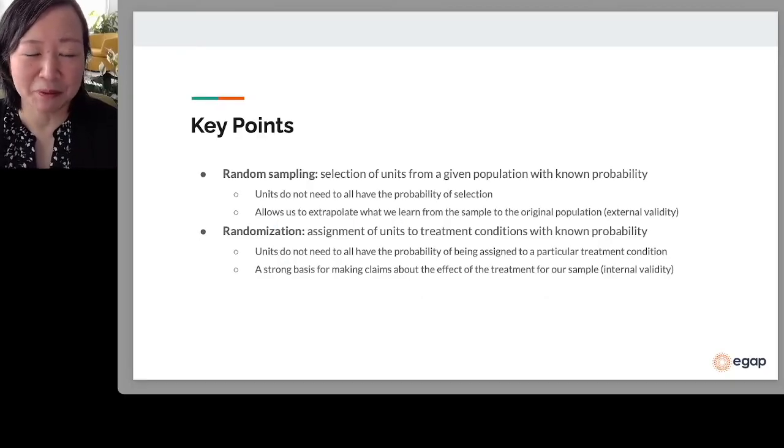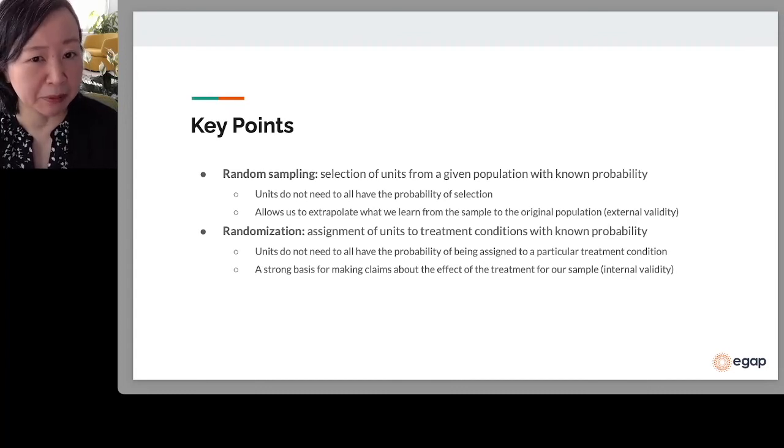Finally, let's summarize the key points. Random sampling is about the selection of units from a given population with known probability. Remember that this probability of selection doesn't have to be the same for all the units. What random sampling does is allow us to extrapolate what we learned from the sample back to the original population.